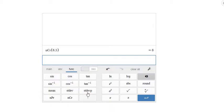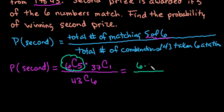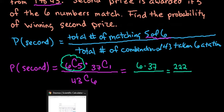Now we need to find 37 things taken one at a time, and we can see that that's 37. And if I simplify this, it does give me 222. So six times 37 is 222.